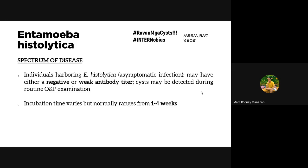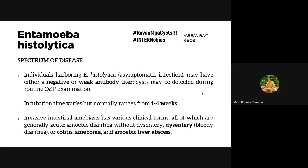Incubation time varies but ranges from 1 to 4 weeks after exposure to infective cysts. Invasive intestinal amoebiasis can be divided into four clinical forms: amoebic diarrhea without dysentery, dysentery or colitis with blood and mucus in stool, amoeboma (a granulomatous tumor-like lesion in the intestine), and amoebic liver abscess during extra-intestinal amoebiasis.